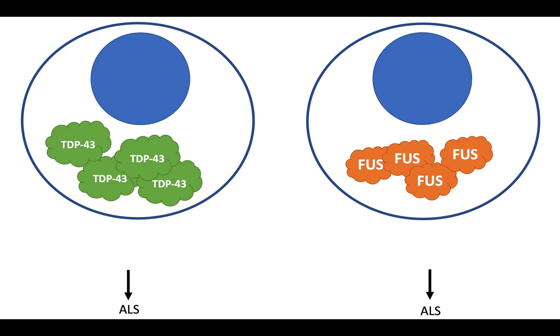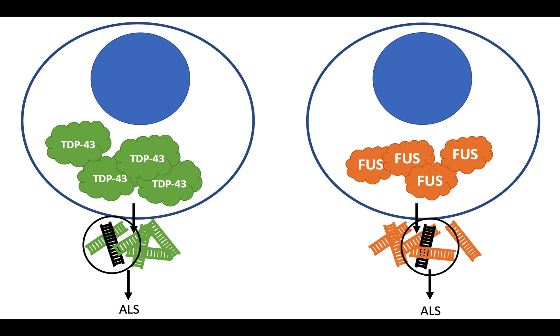My project is looking at what happens to RNA when each of these proteins are not working properly, and then comparing these effects to look for similarly changed RNA that might be important for causing ALS.